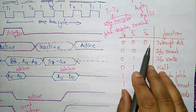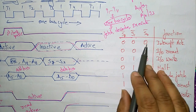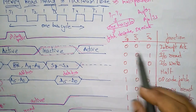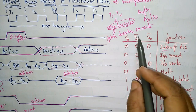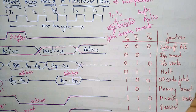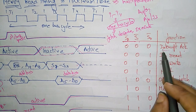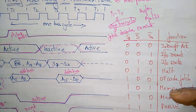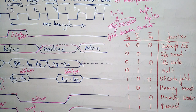For the status signals S2, S1, S0: whenever all are zero (zero bar, zero bar, zero bar means everything becomes one), that means interrupt acknowledgement will occur — the processor is ready to accept some data and is sending the acknowledgement signal to access data from different processors or devices.